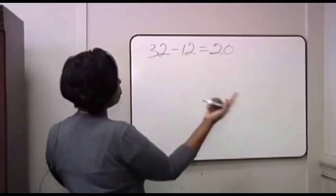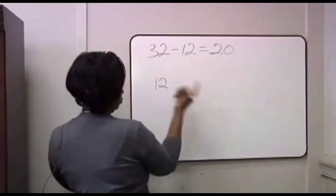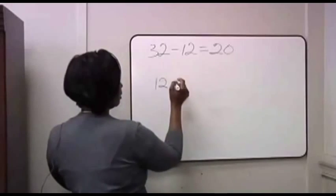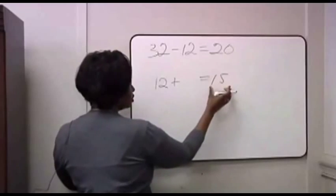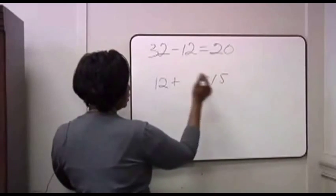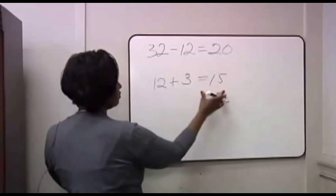What a student might be asked to do is to take the 12, which is what's being subtracted here, and add a number that will get it to a multiple of 5 or 15. That number of course will be 3. So 12 plus 3 is 15.